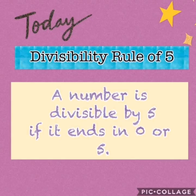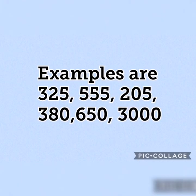Divisibility Rule of 5: A number is divisible by 5 if it ends in 0 or 5. Examples of numbers that are divisible by 5 are 325, 555, 205, 380, 650, and 3000. If you are going to notice, they end in 0 and 5.